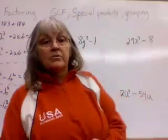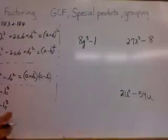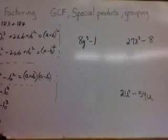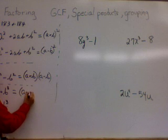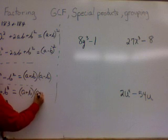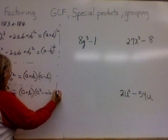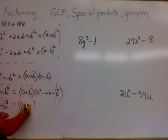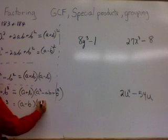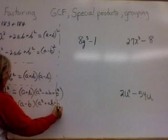Let's do some factoring with special products — sum and difference of a perfect cube. The pattern: if you have a sum of a perfect cube, it factors as (a + b)(a² - ab + b²). If you have a difference of two cubes, the factor pattern is (a - b)(a² + ab + b²).